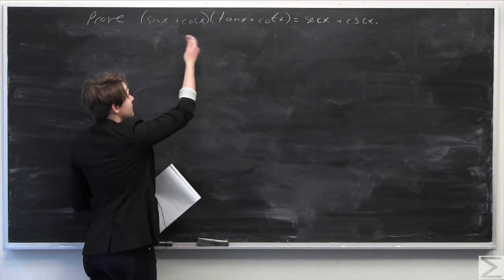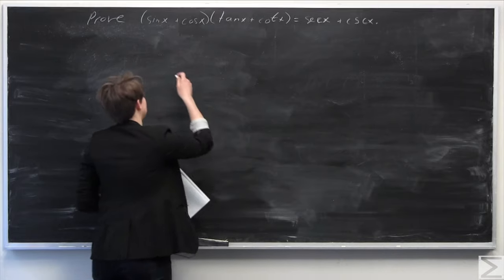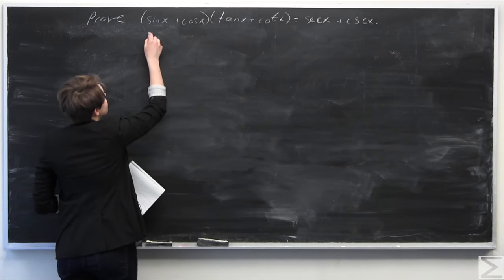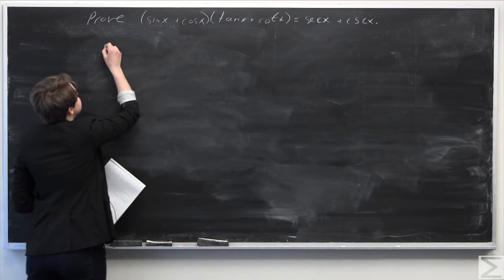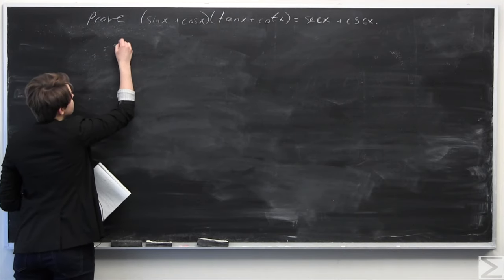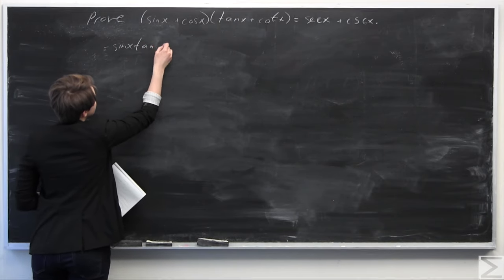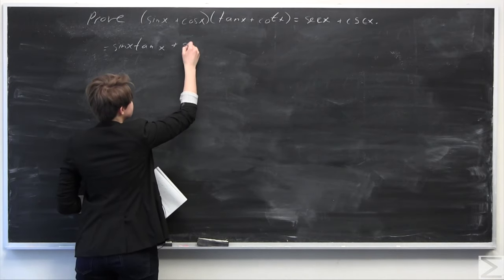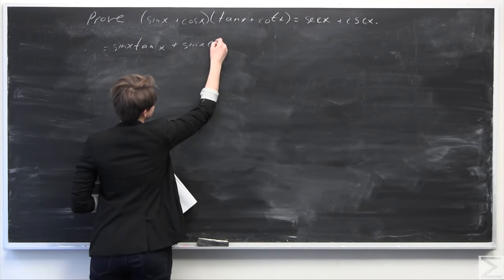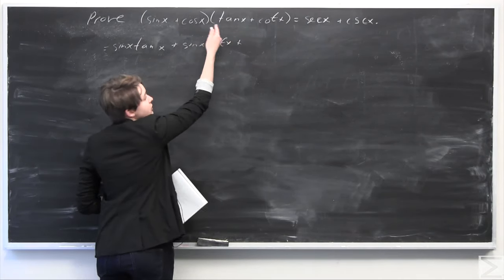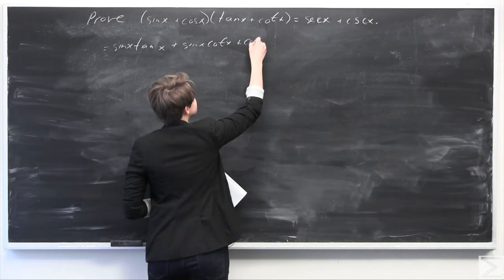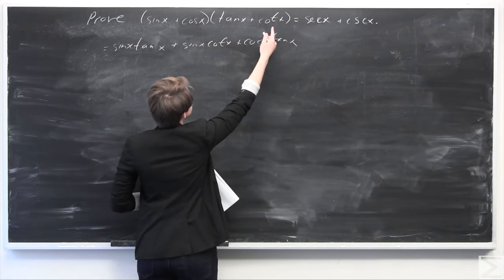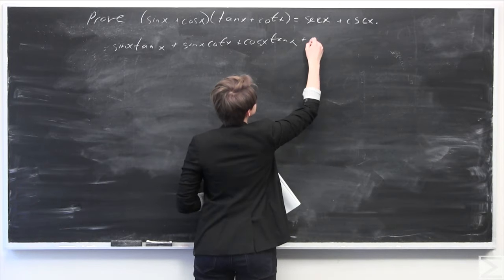We can begin by just distributing out the first term here. We're going to basically FOIL this out. So we have sine of x times tangent of x, plus sine of x times cotangent of x, plus cosine of x times tangent of x, plus cosine of x times cotangent of x.